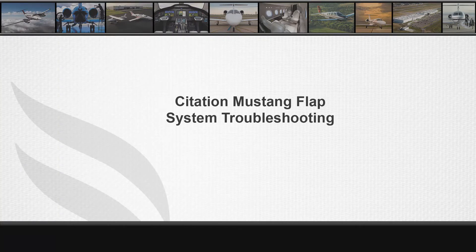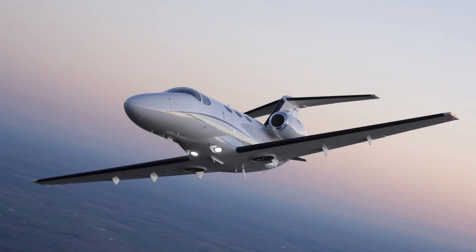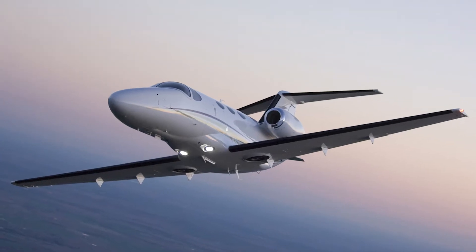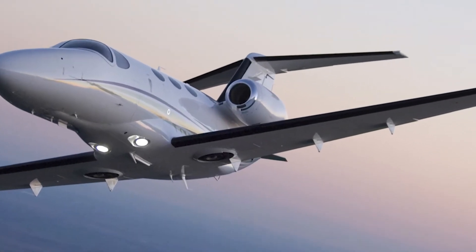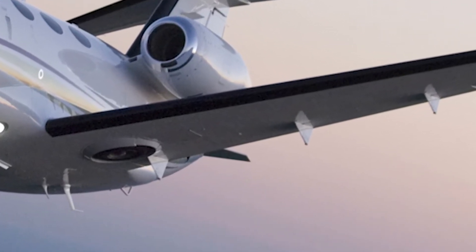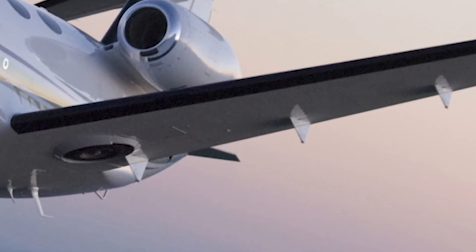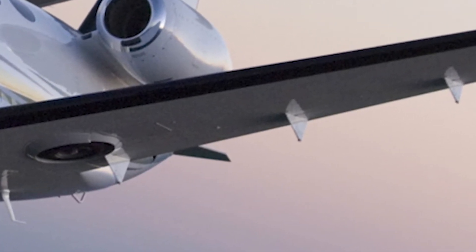This video discusses some troubleshooting tips for the Citation Mustang's flap system. It provides an overview of the printed circuit board based flap controller circuit, the power drive unit, proximity switch locations, and possible system CAS messages, as well as the utilization of CDMS to troubleshoot.